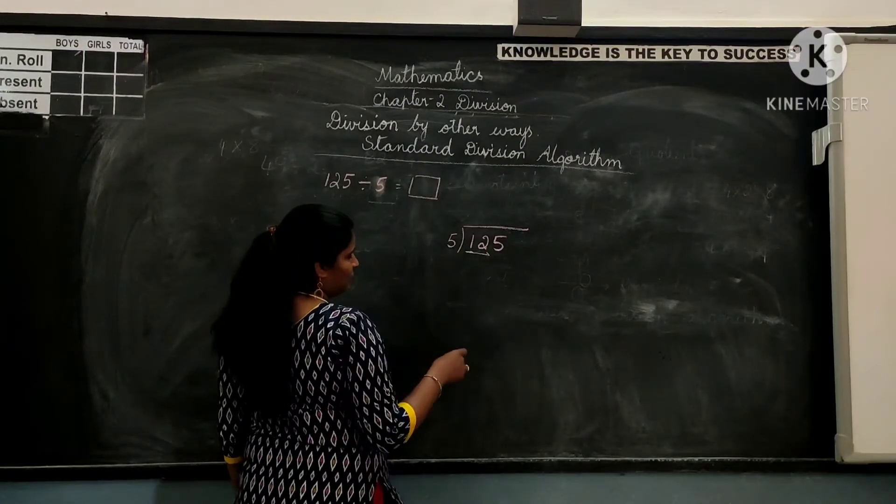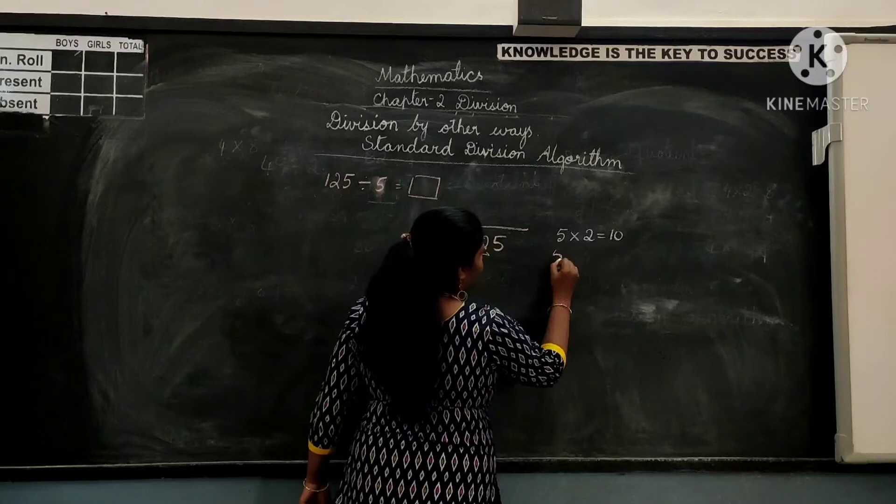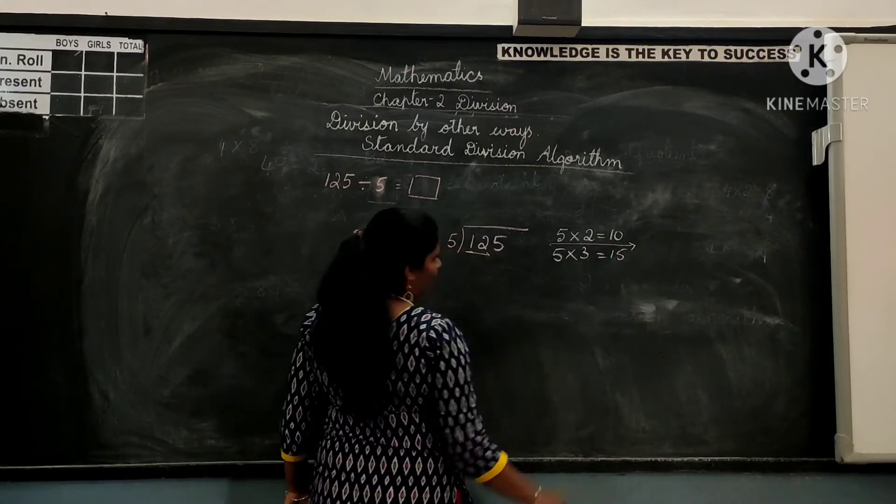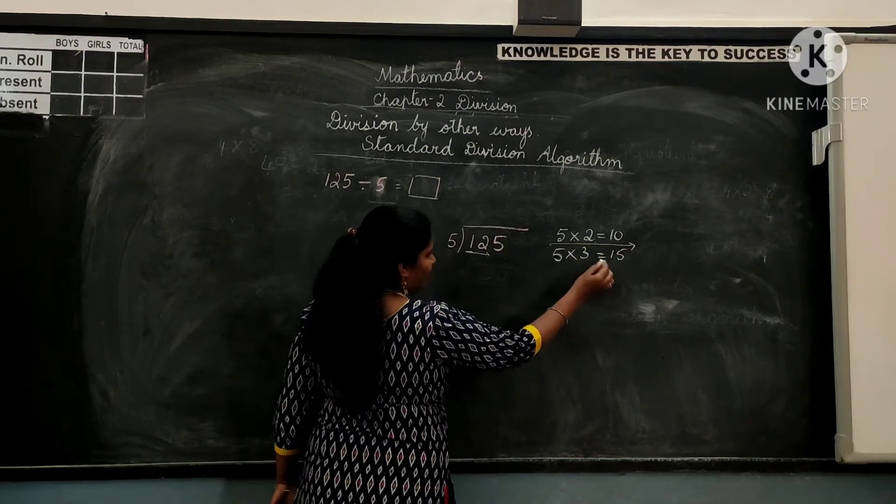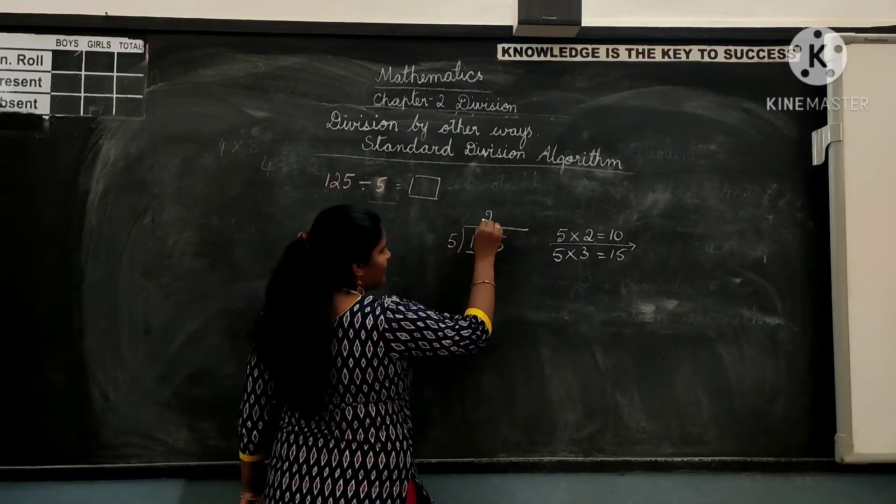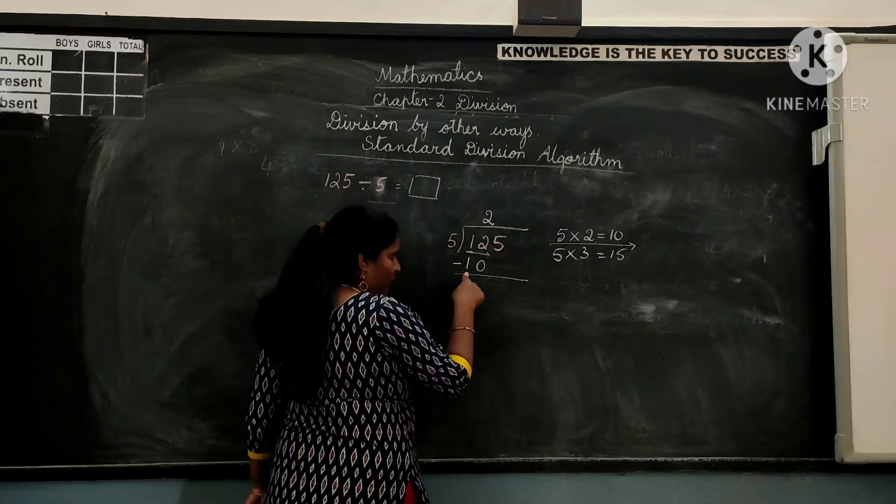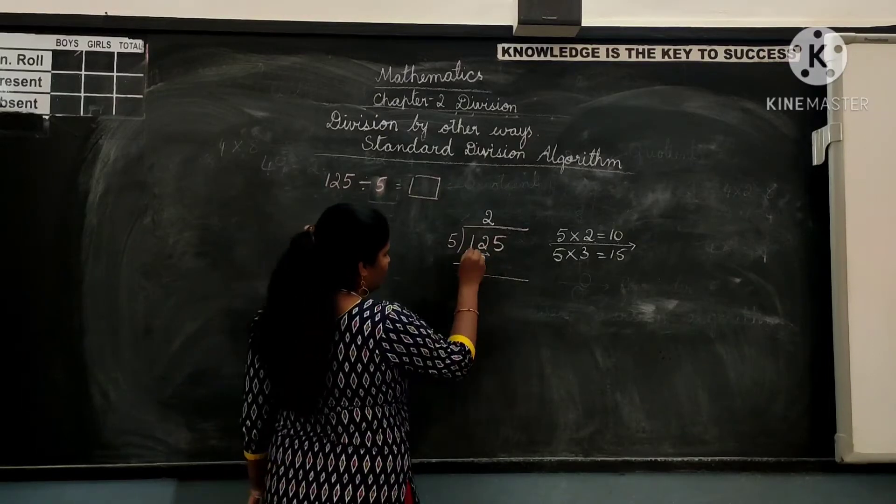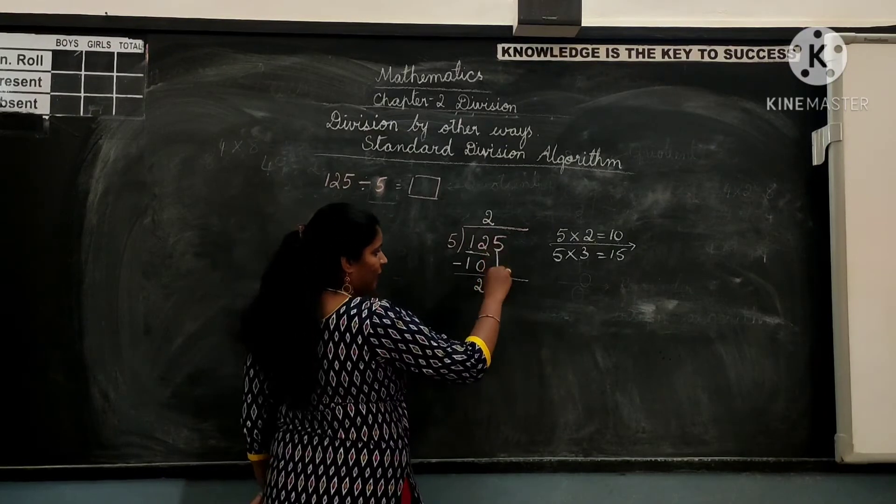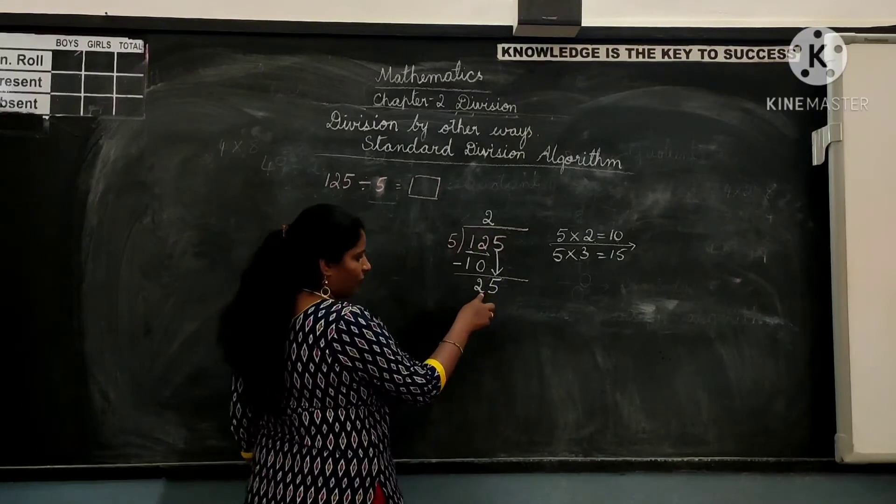So 5 how many times gives you 12? 5 one is 5, 5 two are 10, and 5 three is 15. So we always know that we have to always use a lesser number. So write it as 5 two is 10. Then subtract the product from the dividend. So 12 minus 10 leaves you 2. Now we have to get 5 down from unit space and that makes this number 25.